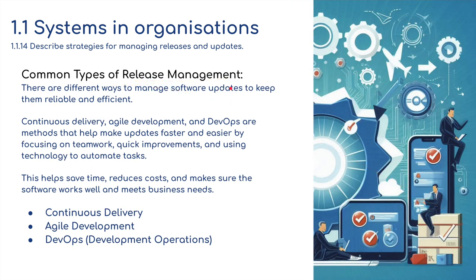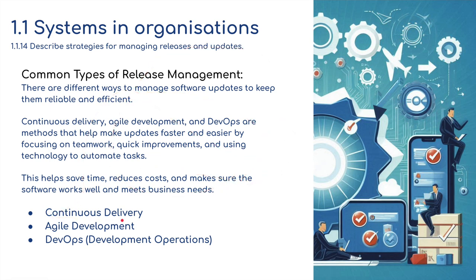Common types of release management. There are different ways to manage software updates to keep them reliable and efficient. Continuous delivery, agile development, and DevOps are methods that help make updates faster and easier by focusing on teamwork, quick improvements, and using technology to automate tasks. This helps save time, reduce costs, and make sure the software works well and meets business needs.